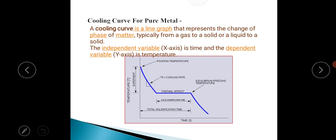Cooling curve for pure metals: A cooling curve is a line graph that represents the change of phase of matter, typically from gas to solid or liquid to solid. The independent variable (x-axis) is time and the dependent variable (y-axis) is temperature. This is temperature versus time. This is total solidification time.